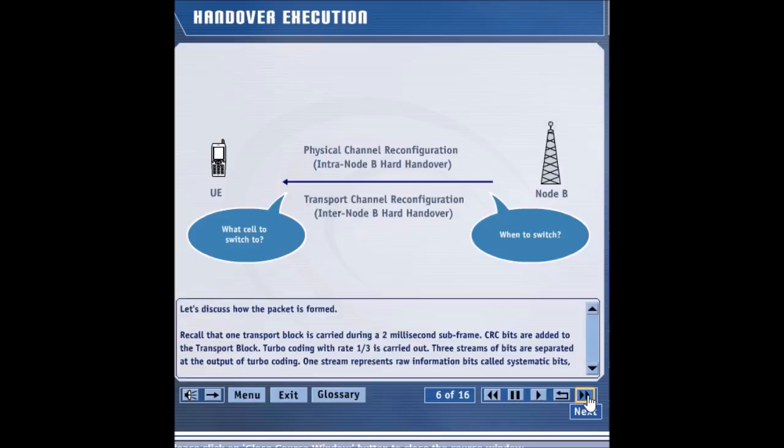However, if the stronger cell belongs to a different node B, an inter-node B handover occurs, and the RAN can use the transport channel reconfiguration message to execute the handover.